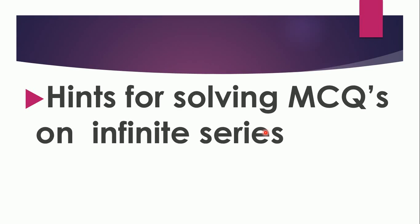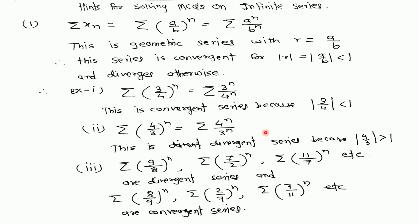In this video I am going to explain some hints for solving infinite series. If we have a series Xn equal to (a/b)^n, then this series can be written in the form a^n / b^n. This is a geometric series with common ratio a/b. We know that a geometric series converges if mod of r is less than 1, therefore this series is convergent if mod of a/b is less than 1, and it diverges otherwise.